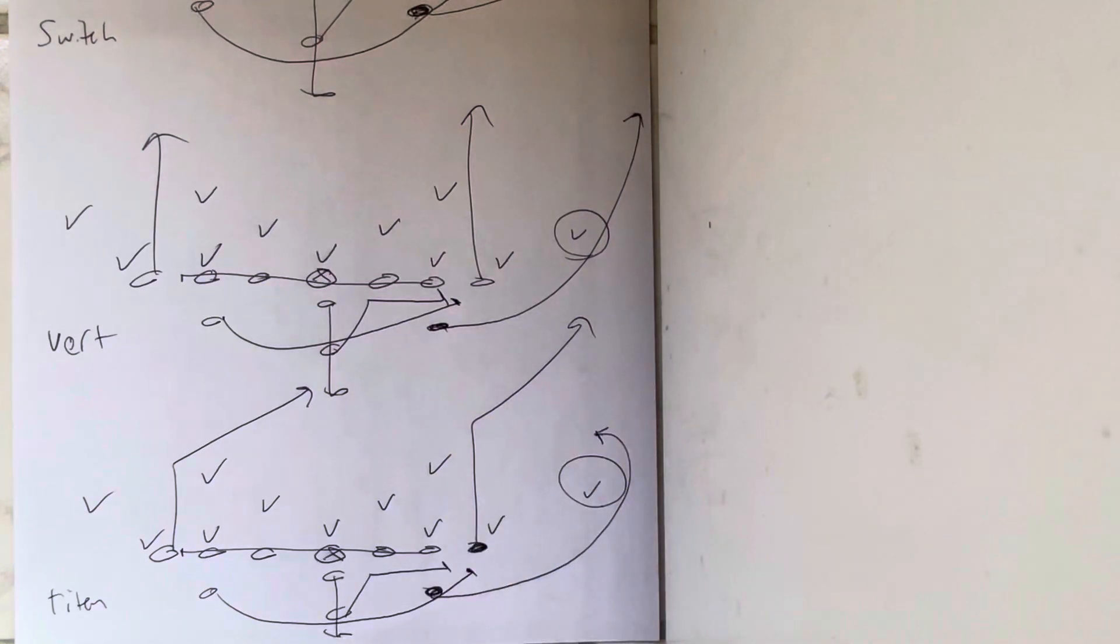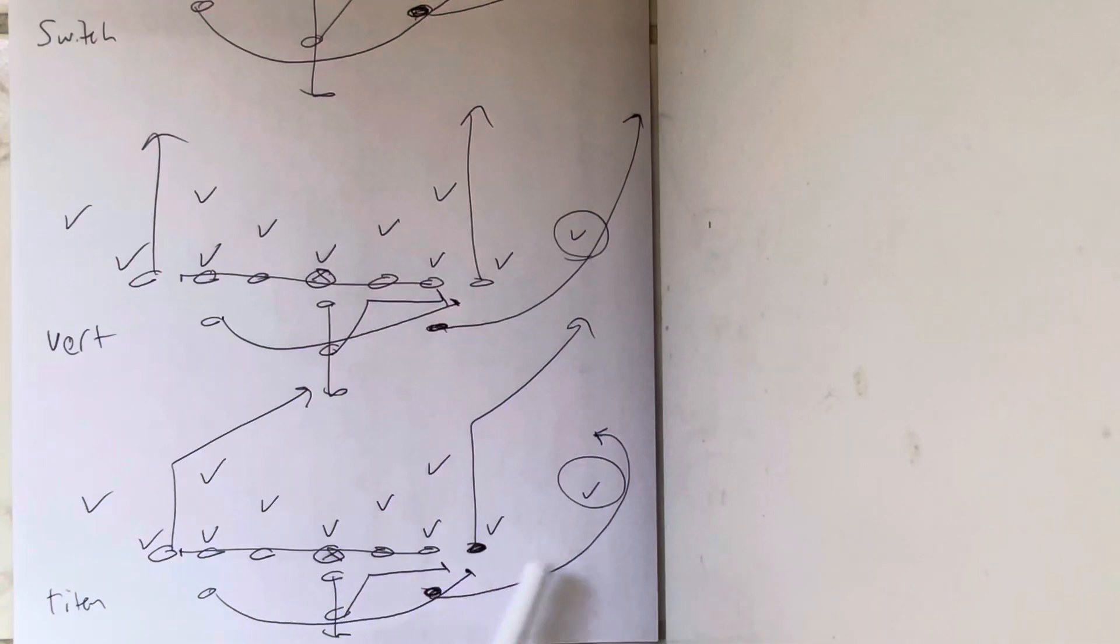So they're high-low on the safety. Oftentimes this is called a smash concept or the China concept, but in the Paul Johnson world this is what's called titan, T-I-T-A-N. The quarterback five-step drops and throws him the ball. If he can actually get over the top of it, he'll throw him the ball. These are three concepts that you utilize against two-safety defenses or any defense with a play-side safety.